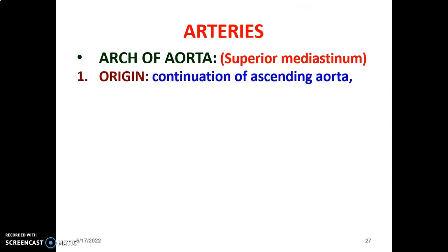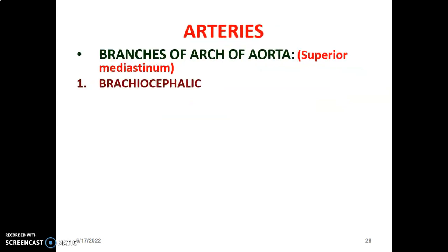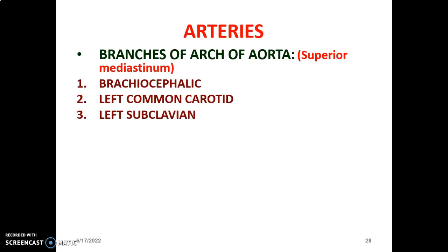The arc of the aorta is located in the superior mediastinum. It is a continuation of the ascending aorta, beginning at the sternal angle of Louis at the T4-T5 junction and terminating at the same plane by continuing as the descending aorta, which is the thoracic part of the aorta. The arc of the aorta has three major branches: the brachiocephalic trunk, which gives the right common carotid and right subclavian; the left common carotid; and the left subclavian artery. These branches are located in the superior mediastinum.